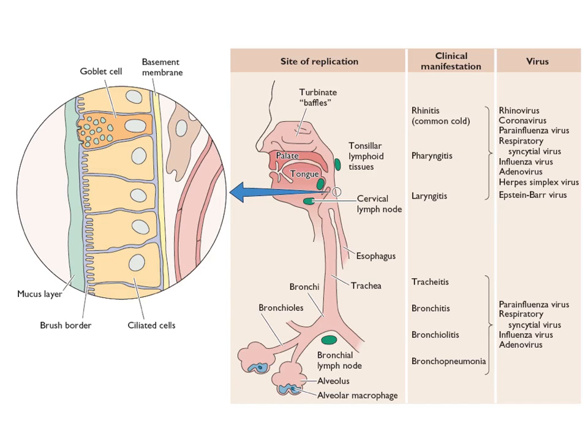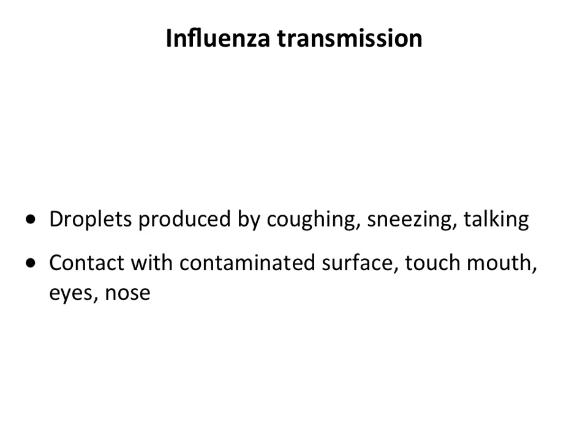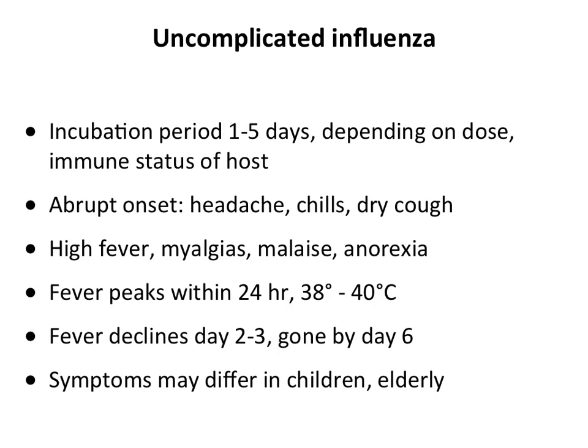Influenza in humans is limited to the respiratory mucosa; it doesn't spread systemically. Transmission is by droplets from coughing, sneezing, and talking, but also by touching a contaminated surface and then touching your nose, mouth, or eyes. You have both aerosol and contact mechanisms of spread. Uncomplicated influenza has an incubation period of one to five days, depending on inoculum size and immune system health. People can often identify the exact hour when they started feeling bad.